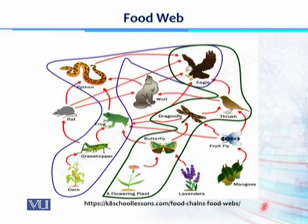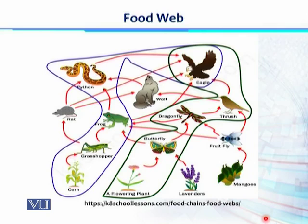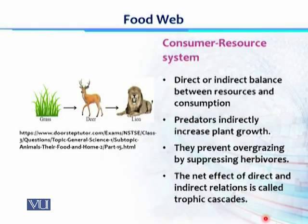But if we only focus on one apex predator, which is the eagle, then the eagle is eating multiple sources of food — not only thrush. So there are multiple sources of food available in the form of secondary consumers or primary consumers. This food web is a very interconnected network, and this is the benefit of the food web, which helps to maintain and sustain the ecosystem.